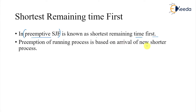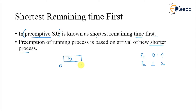Preemption of a running process is based on the arrival of a new shorter process. For example, suppose P1 arrives at time 0 with burst time 4, and P2 arrives at time 1 with burst time 2. P1 starts running, but at time 1, P1 has 3 units remaining while P2 has only 2. Since 2 is less, we preempt P1 and start scheduling P2 for the remaining two time units.